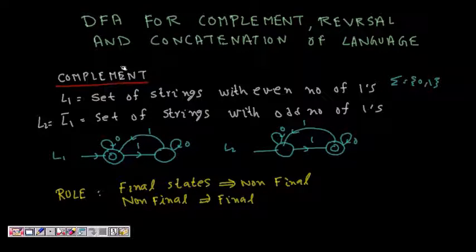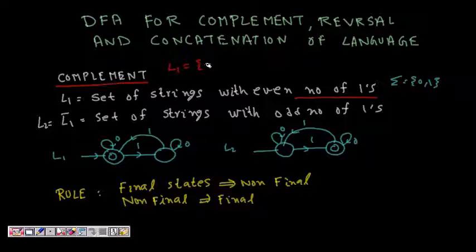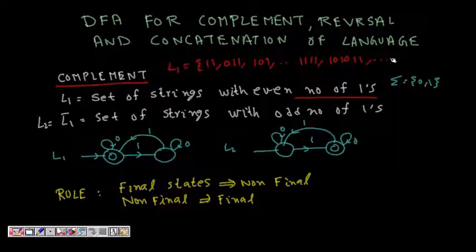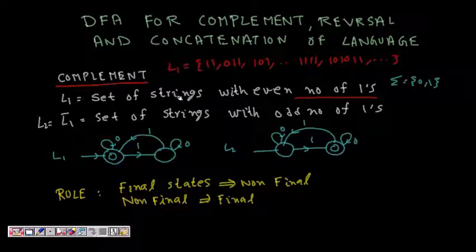If L1 is a set of strings with even number of ones, and Sigma is {0, 1}, then L1 contains strings like 1100, 1111, 10, 1010, and so on — all having an even number of ones. The complement of L1 will be the set of strings with an odd number of ones.